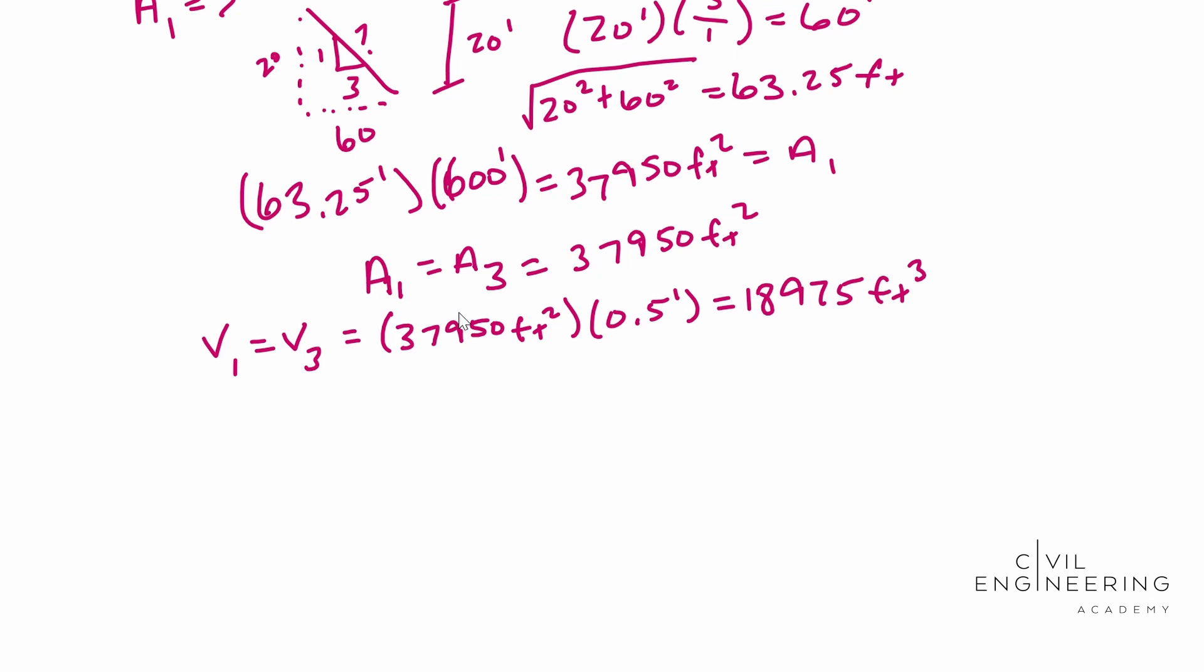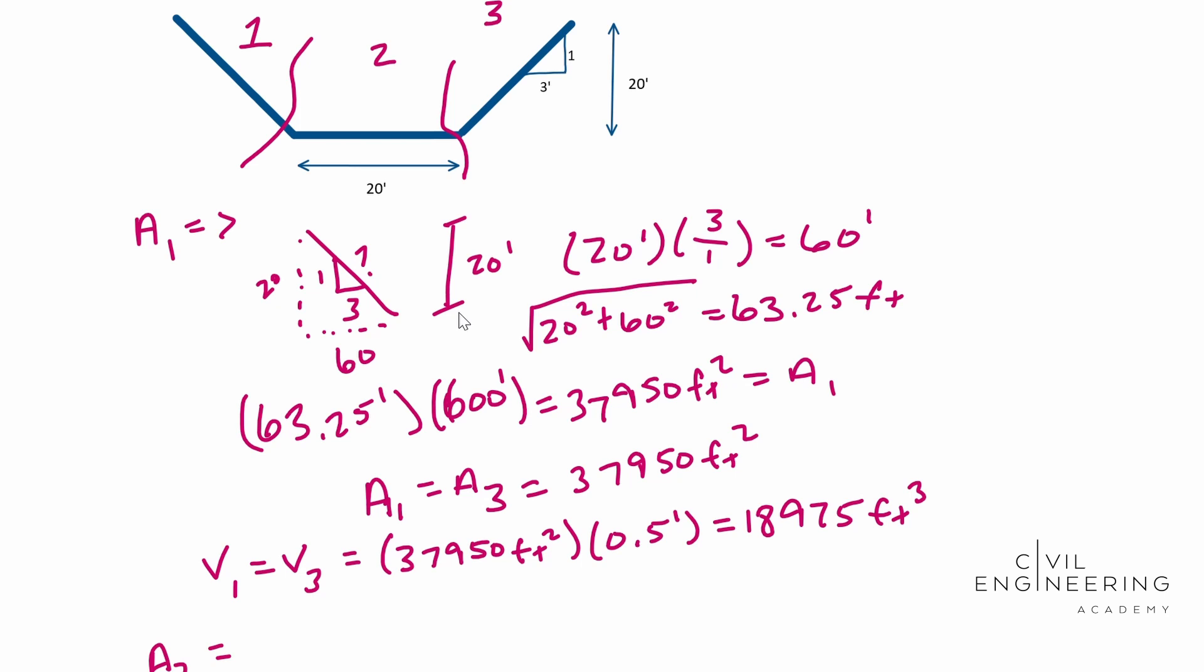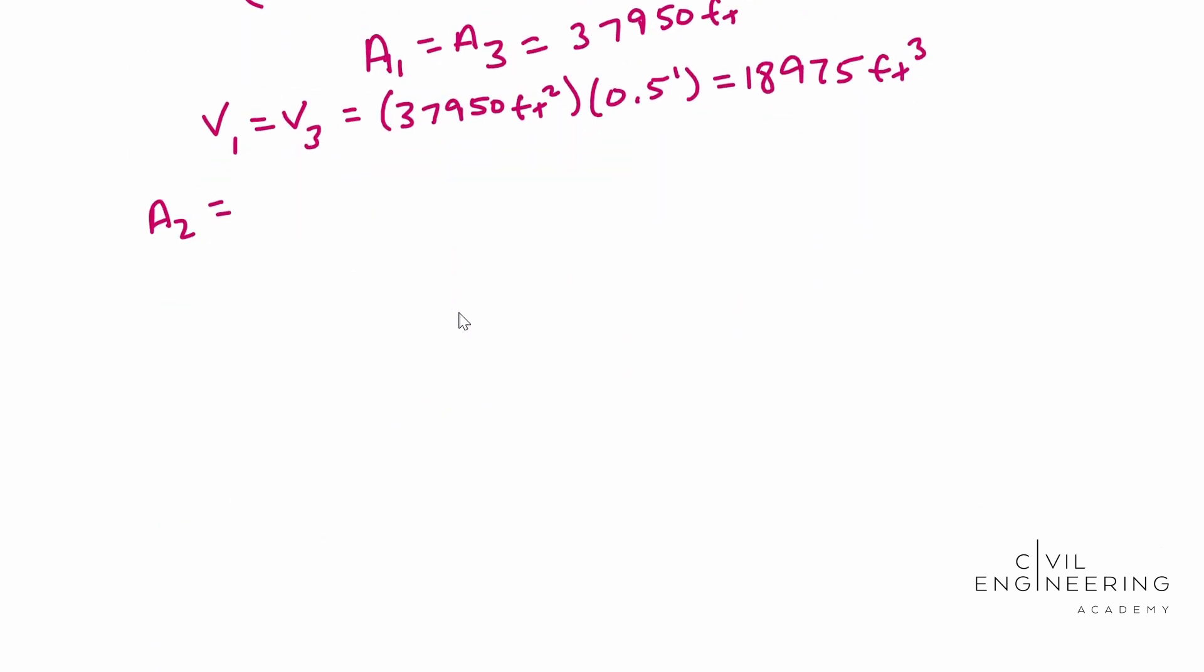So now it's time to find our area for two, A2. This one is just a flat one. It's going to be 20 feet wide and 600 feet in depth. So this one's a pretty easy one. 20 feet times 600 feet. And that guy ends up being 12,000 square feet. Let's go ahead and find our volume for two. V2 is equal to 12,000 square feet times your thickness, so 0.5 feet. That ends up with 6,000 cubic feet.